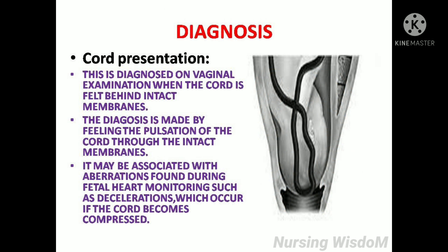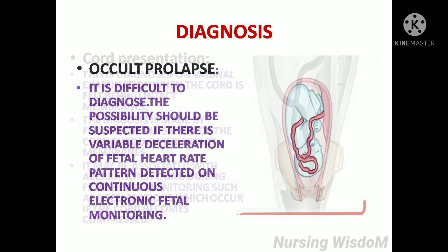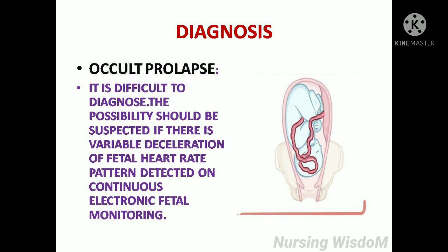Diagnosis: Cord presentation is diagnosed on vaginal examination when the cord is felt behind intact membranes. The diagnosis is made by feeling the pulsation of the cord through the intact membranes. It may be associated with decelerations found during fetal heart monitoring if the cord becomes compressed. Occult prolapse is difficult to diagnose; it should be suspected if there is variable deceleration of the fetal heart rate pattern detected on continuous electronic fetal monitoring.